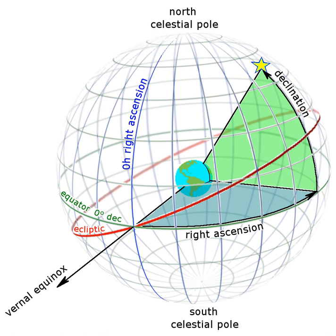Any units of angular measure can be used for declination, but it is customarily measured in degrees, minutes, and seconds of sexagesimal measure, with 90 degrees equivalent to a quarter circle.